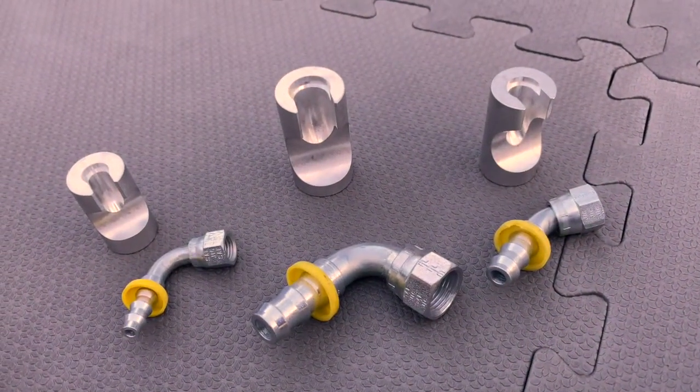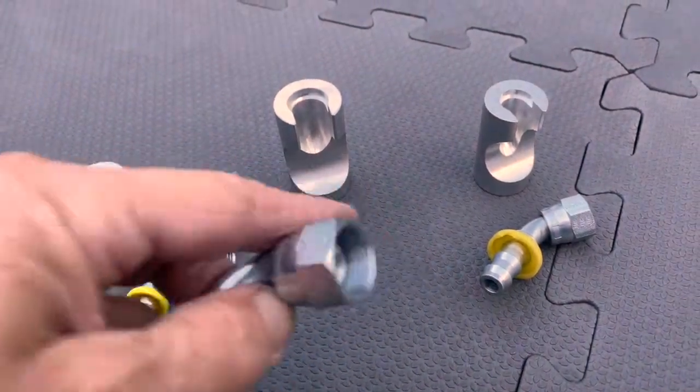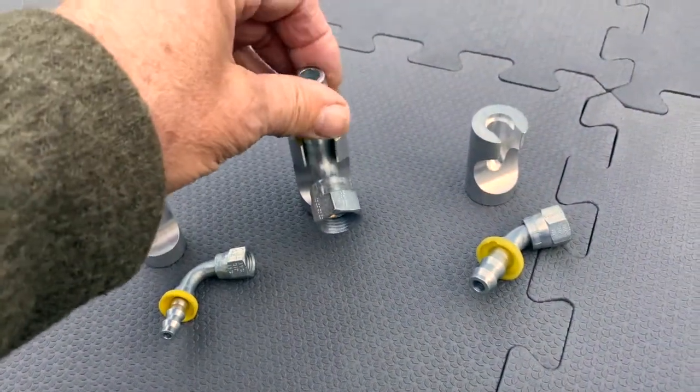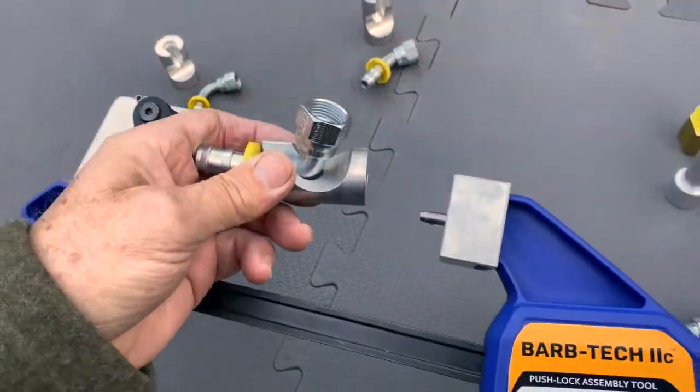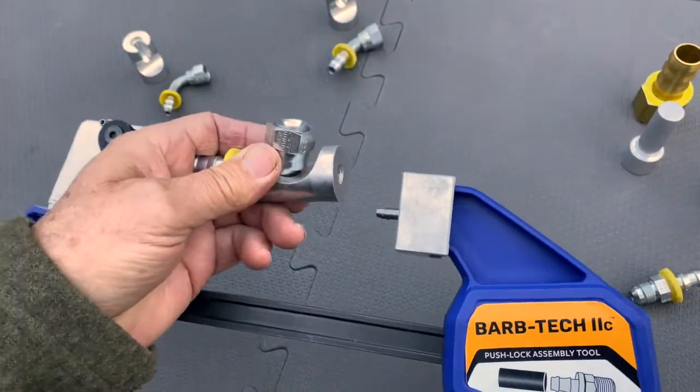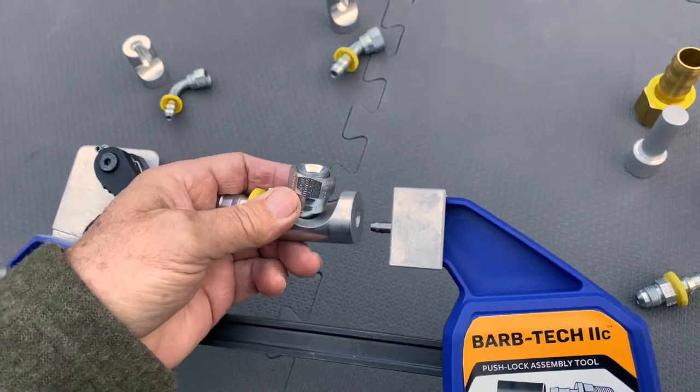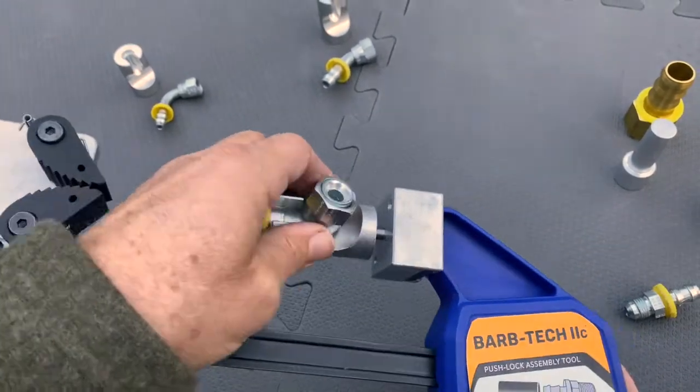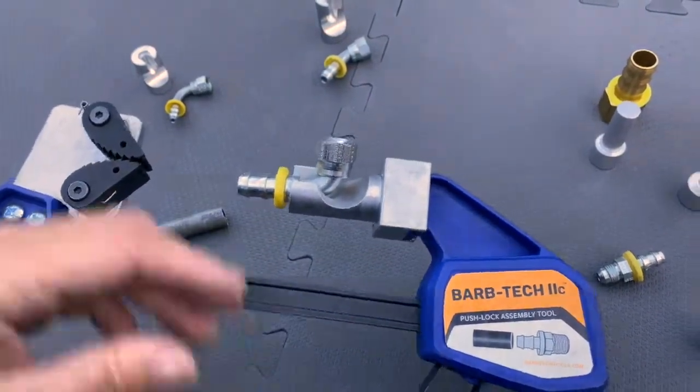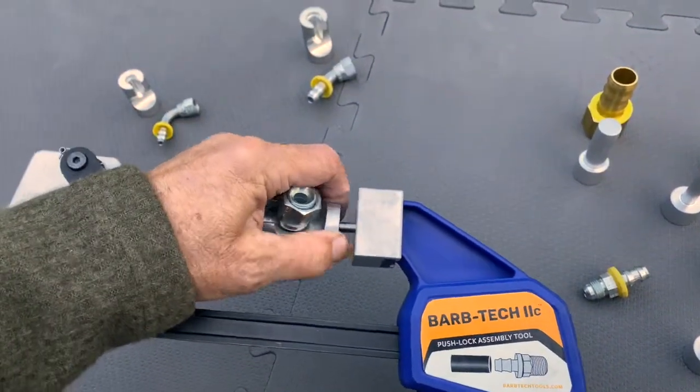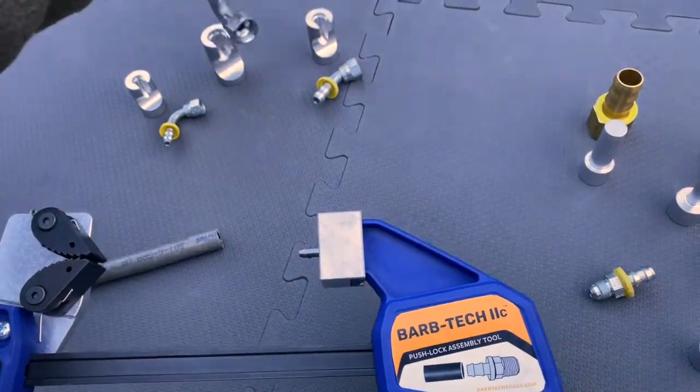The mandrels basically just sit in there. They have a click-on design, just like all the straight mandrels. They just click in place and hold the fitting really well. I'm going to give you a quick demonstration of how simple this thing will push a fitting into a hose.